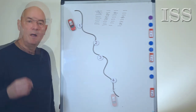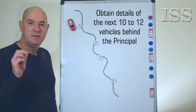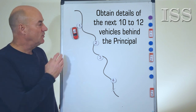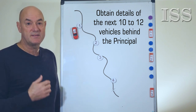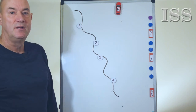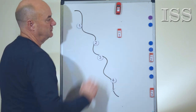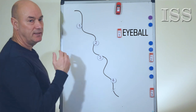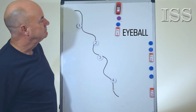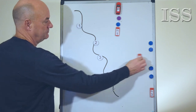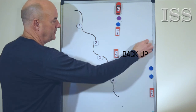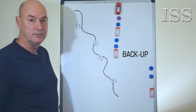I mentioned counting the next 10 to 12 vehicles behind your principal. Basically, any surveillance is more likely to be behind than in front of the principal or their target. Why 10? Well, if this is the principal, any surveillance — the lead car, or the eyeball as we refer to it — is likely to have a couple of third-party cars as cover. If it's a two-handed team, they're going to have a backup car which is close by but somewhere behind the eyeball, and again they may have a couple of cars as cover.